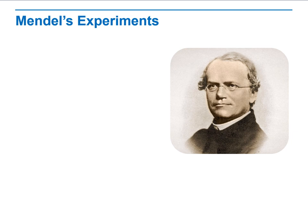Mendel studied the differences between the traits of parents and offspring by studying pea plants — looking at traits such as the color of the seeds and the shape, whether it was wrinkled or smooth.